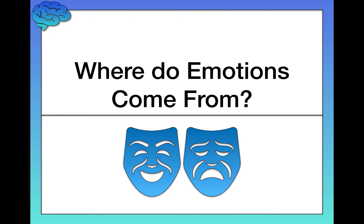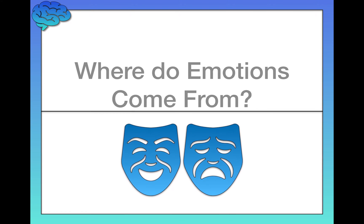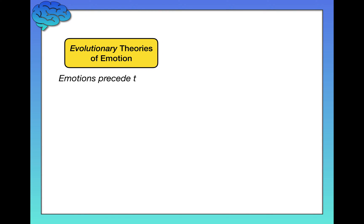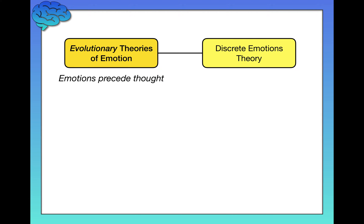In this video we're going to shift gears to talk about emotion, and we're specifically going to focus on the origins of our emotions — where our emotions come from. There are many different theories of emotion in psychology. I'm going to focus on the four most prominent, and we can categorize these into two different categories. The first category is known as evolutionary theories of emotion, and the key idea is that emotions precede thought — emotions come before thought — so cognition is relatively unimportant.